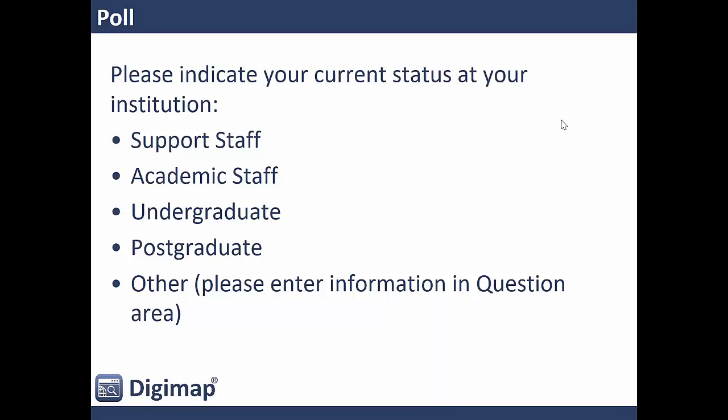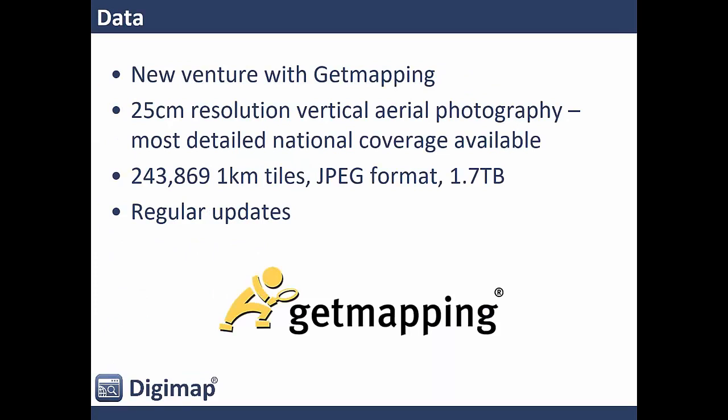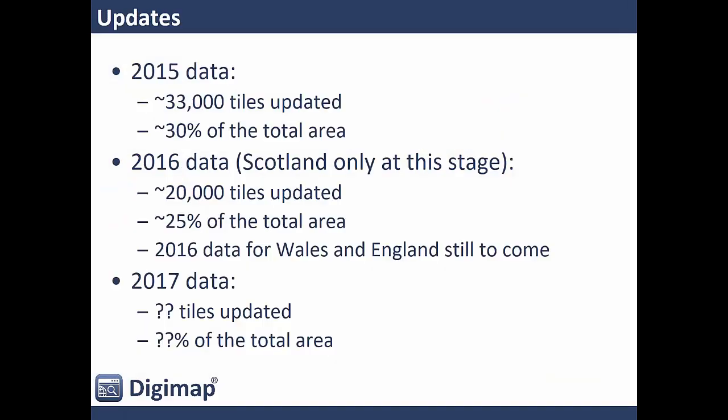A little bit about the Aerial Digimap collection. This was a new venture with Get Mapping, who are the data provider for all of our aerial imagery. We first launched the service in October 2016, so it's been running for around 18 months. We chose Get Mapping as the supplier because they've got really good coverage of the whole country down to 25 centimetre resolution — the most detailed national coverage available. The service contains around a quarter of a million one-kilometre tiles, all in JPEG format, and we get regular updates. We've had three updates so far, covering data flown by Get Mapping in 2015, 2016, and we recently received 2017 data.